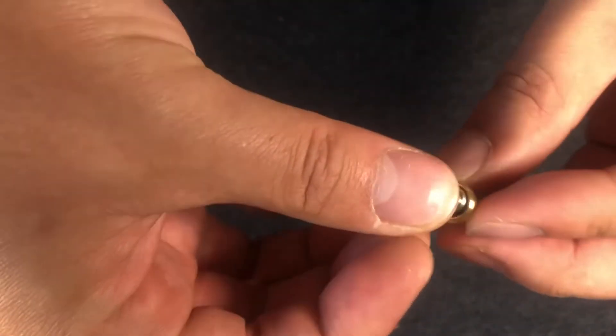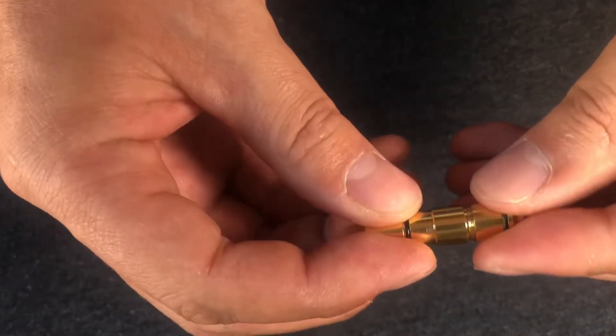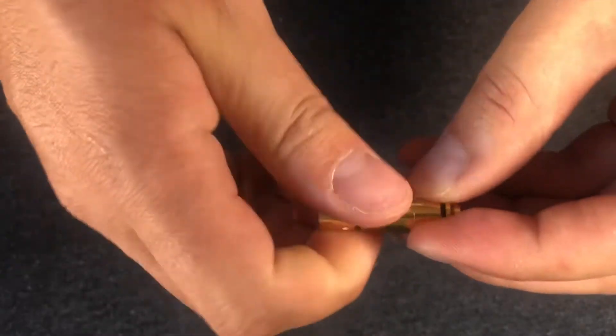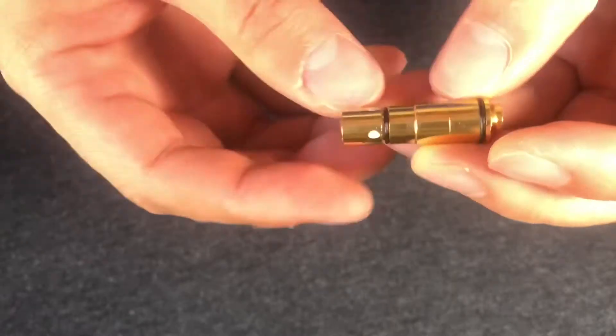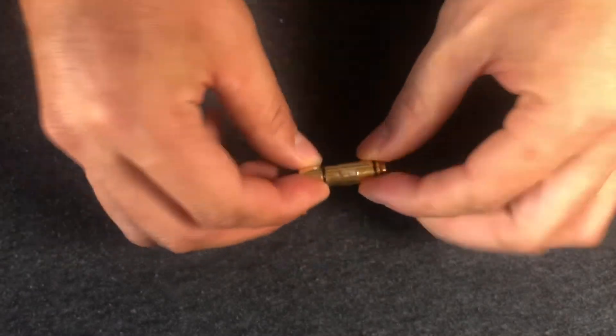Once all three are in place, screw the end cap back on and test by pushing down on the firing pin pressure pad. You have now reassembled your iDryFire laser cartridge.